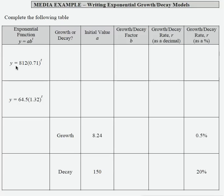I have y equals 812 times 0.71 raised to the t power. The b value here is where I'm going to start. That is my factor of either growth or decay, and in this case, because my b value is less than 1 and bigger than 0, that is a decay factor.